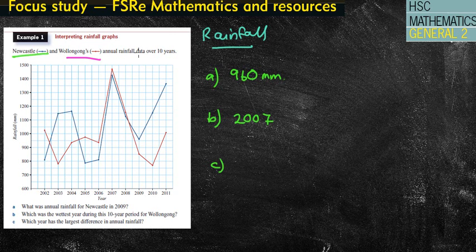which brings us to the last question, which says, Which year has the largest difference in annual rainfall? Well, the difference between Newcastle and Wollongong will be the gap between them. For example, if we look at the distance here, which is quite big, we've got... Actually, this one's bigger, isn't it? Measuring the gaps at different years, this one looks like to be the biggest gap, which will be in the year 2010.